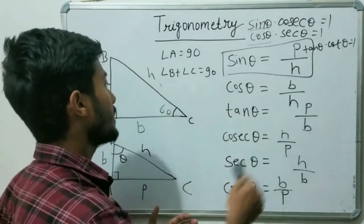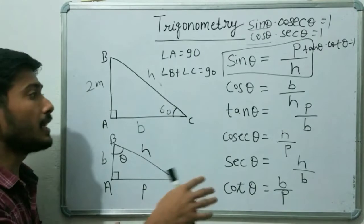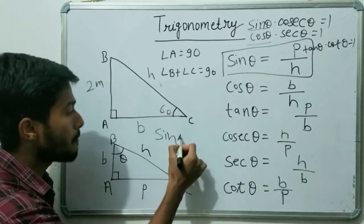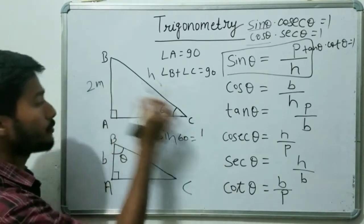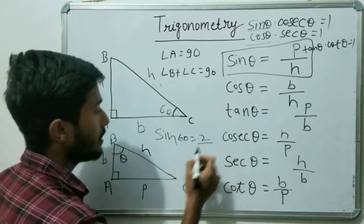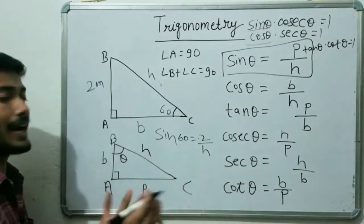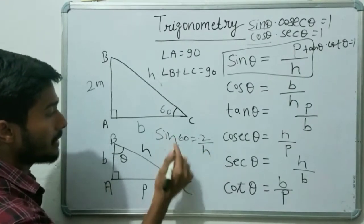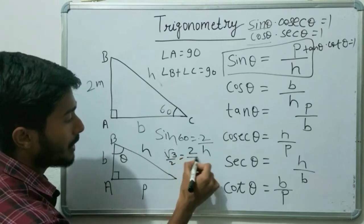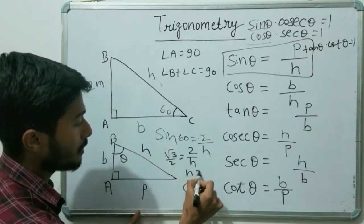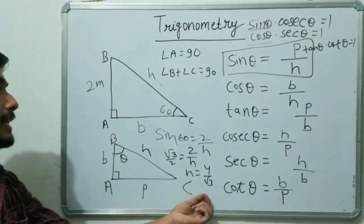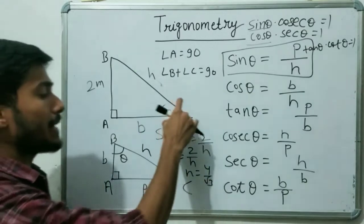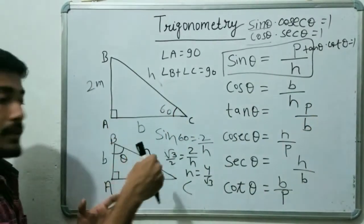For special angles like 30 degrees and 60 degrees, trigonometry has standard values. Sin 60 equals root 3 over 2, so we write: root 3 over 2 equals 2 upon H. Solving, H equals 4 over root 3. Similarly, using tan theta equals P over B, and knowing tan 60's value, you can easily find the base B. So by using these formulas you can solve these problems easily.